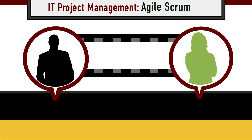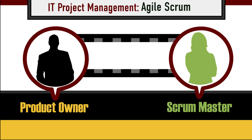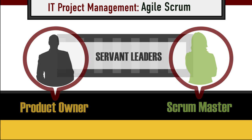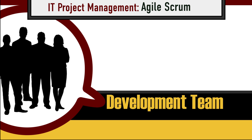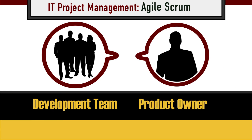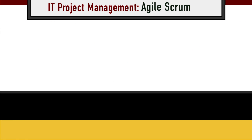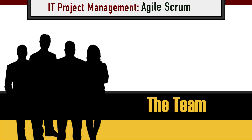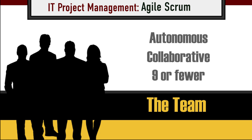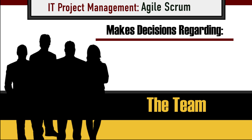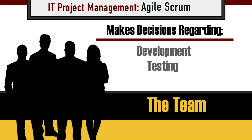Remember that both the Product Owner and the Scrum Master are servant leaders. They're available to help, but they don't direct or dictate the work. The Development Team is responsible for completing the work. They collaborate with the Product Owner during each sprint to deliver a working prototype. The team, usually made up of nine or fewer long-term members, should be collaborative and autonomous. The team makes their own decisions about development, testing, and production.